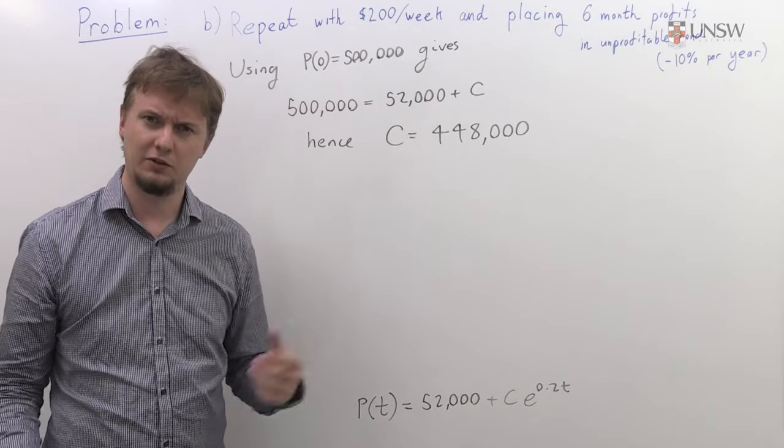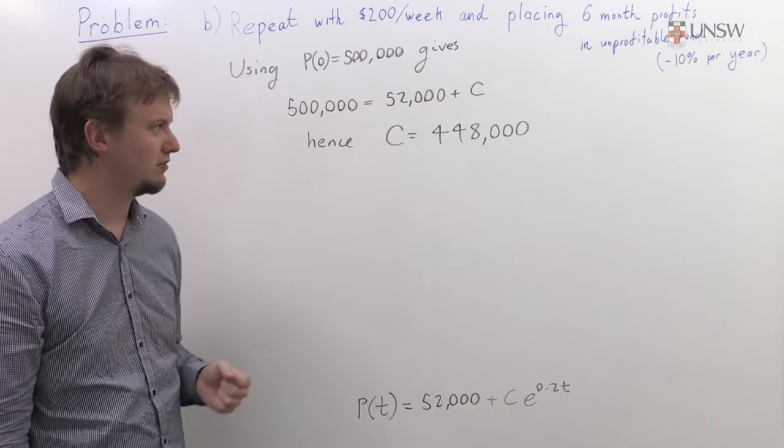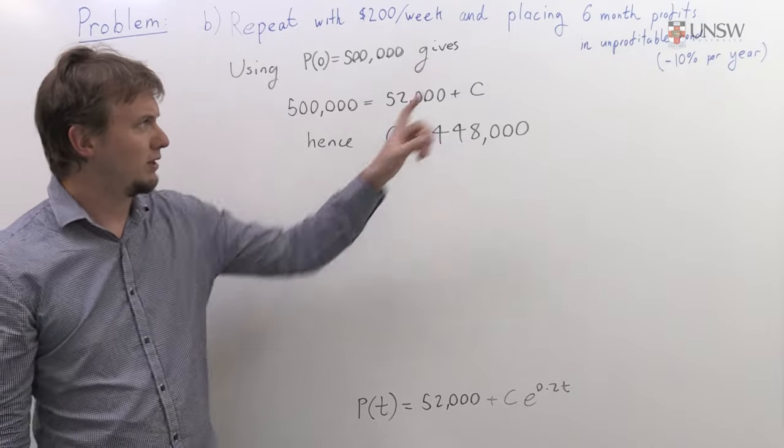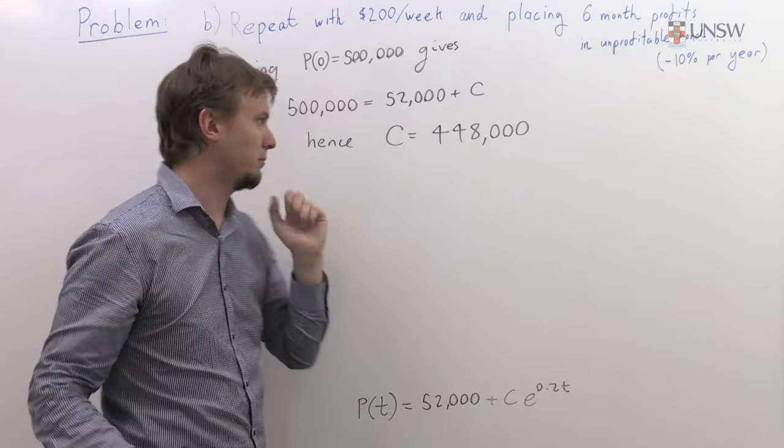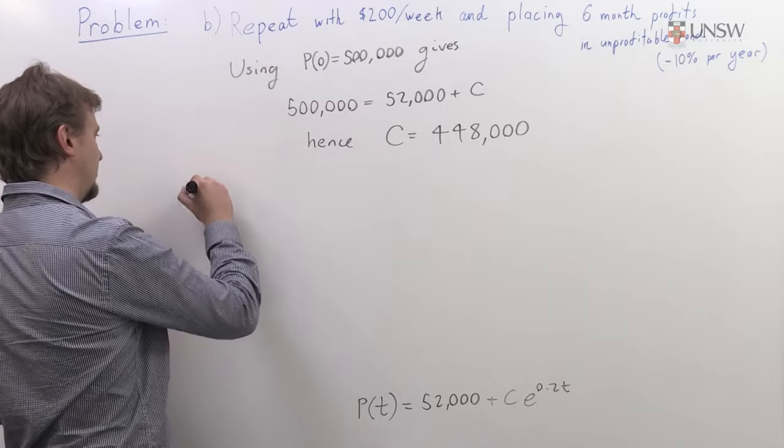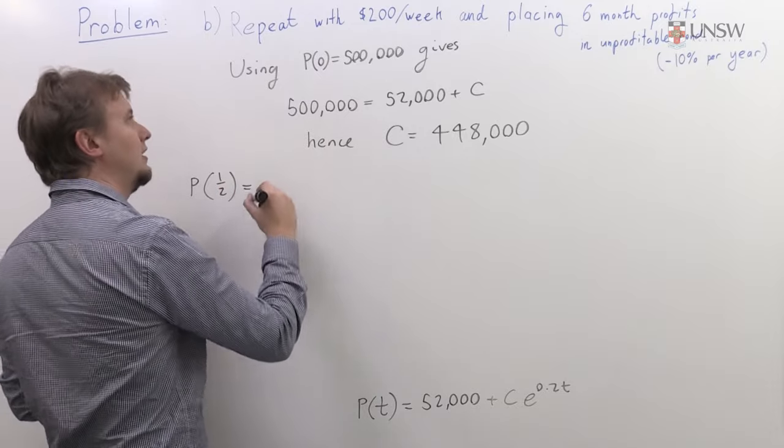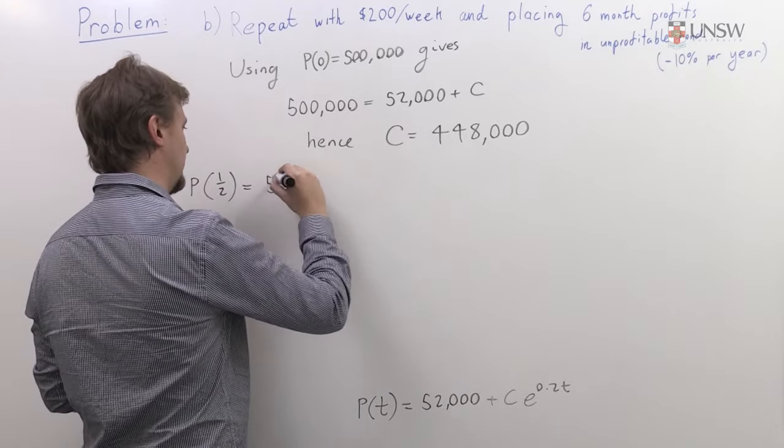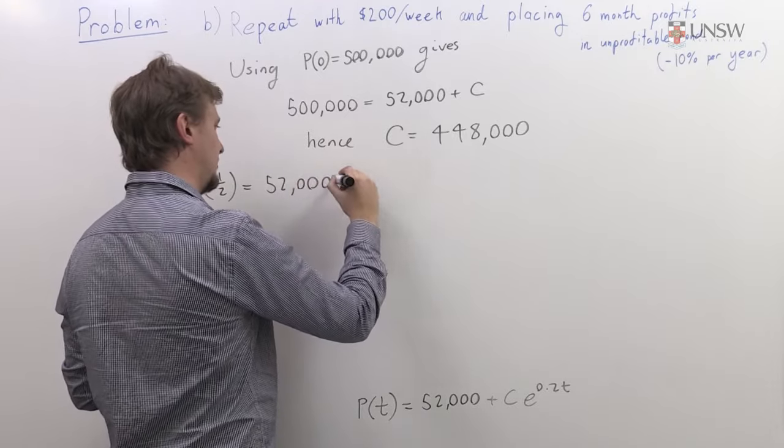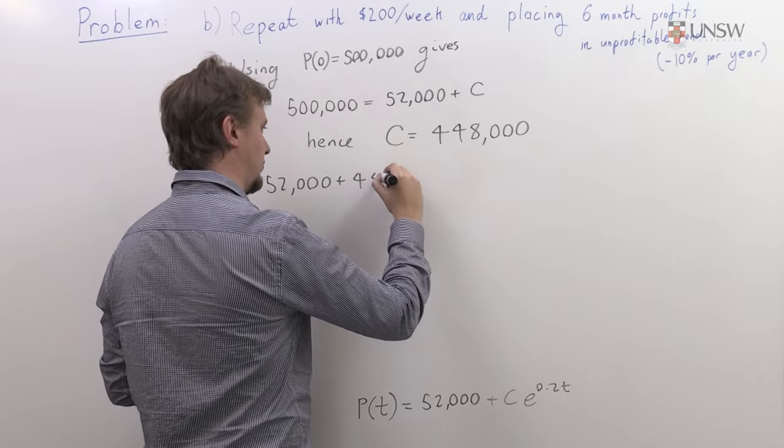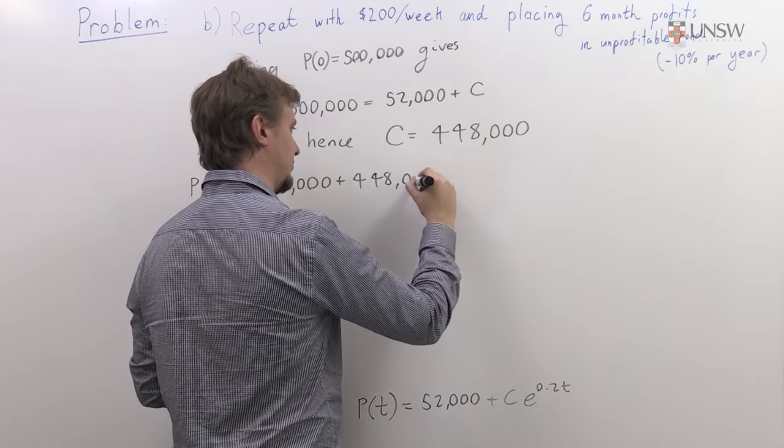We can now figure out what our initial bond is doing with that extra expense. Let's use it to work out what our profits will be at the sixth-month point. So the profits halfway through a year, at t equals a half, is equal to 52,000 plus 448,000.